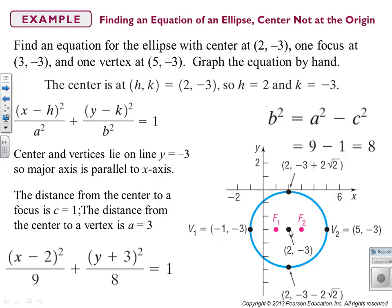To find the minor axis endpoints, add or subtract 2√2 to our y-coordinate of −3, giving (2, −3 + 2√2) and (2, −3 − 2√2), so we can draw the ellipse.